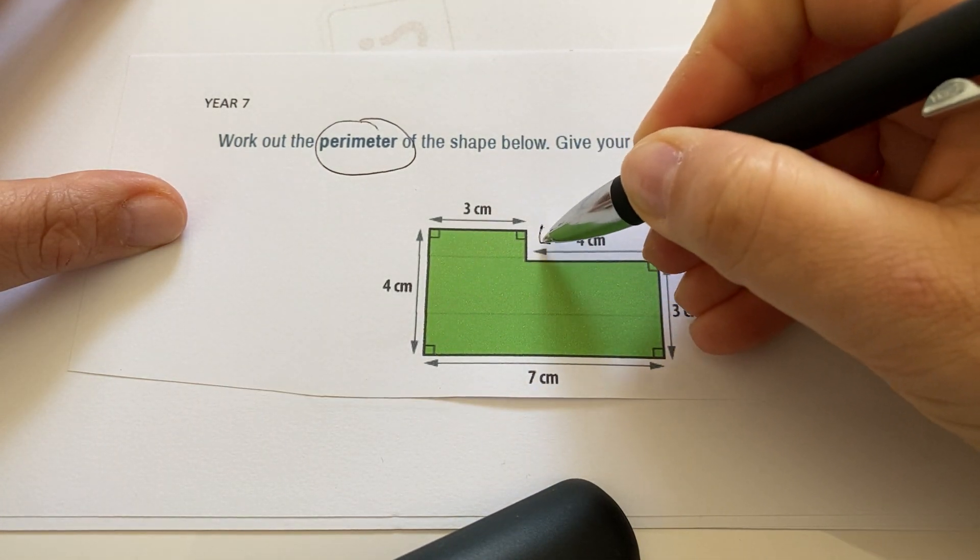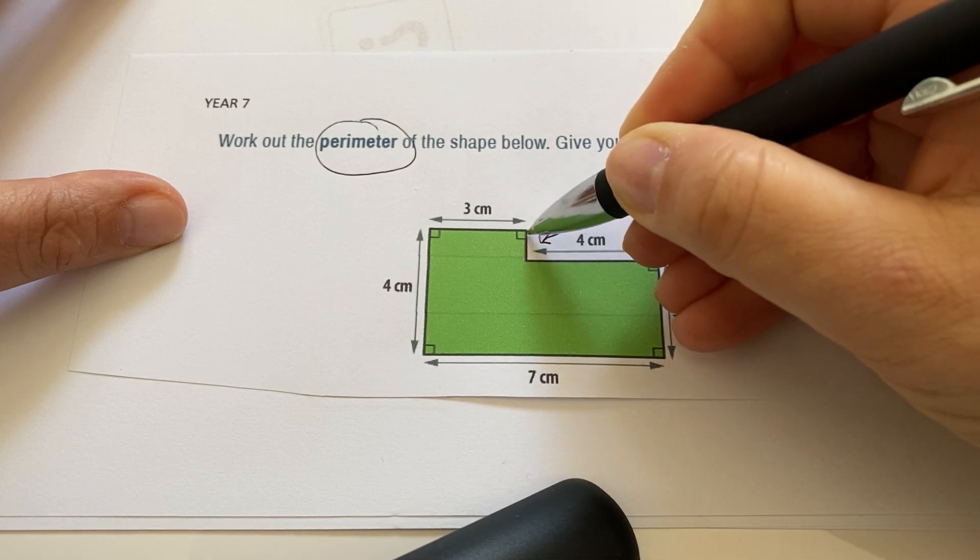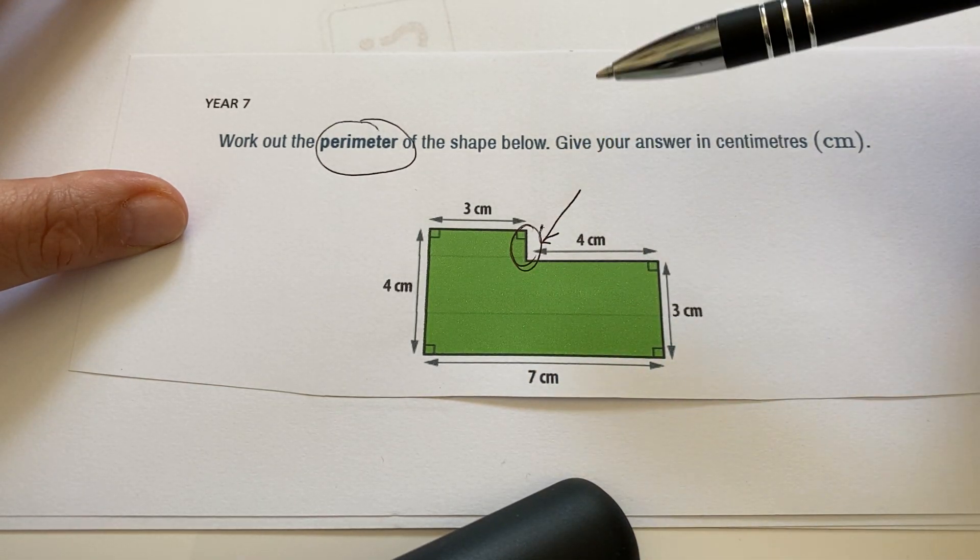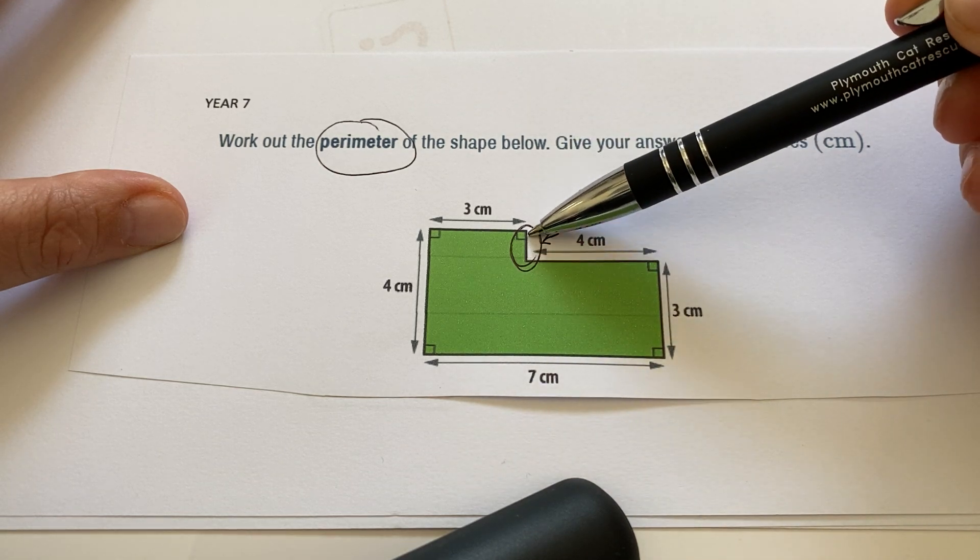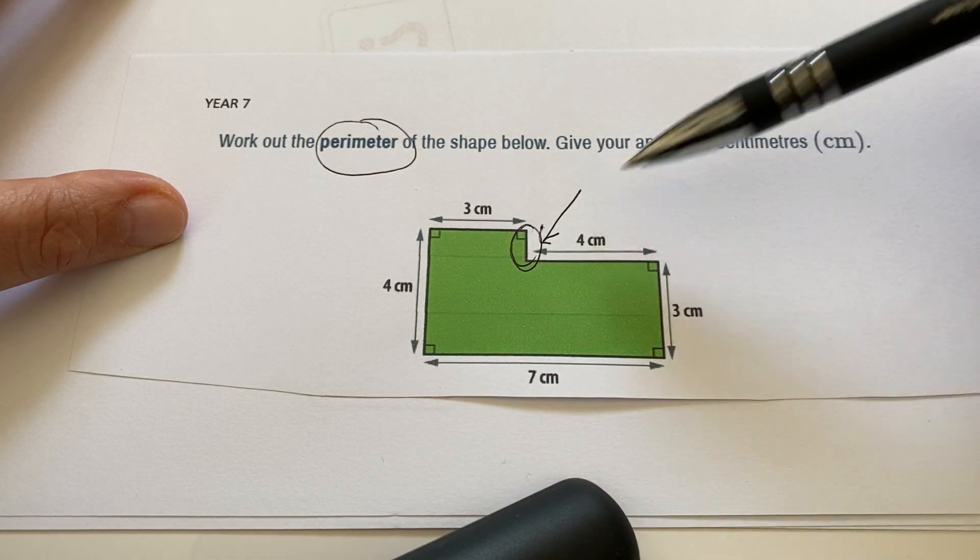What you can see is there is a side there, this side here, that's missing. So the first thing you need to do is calculate the length of that side before you add up all the numbers.